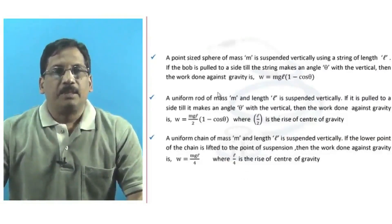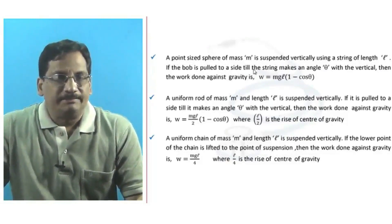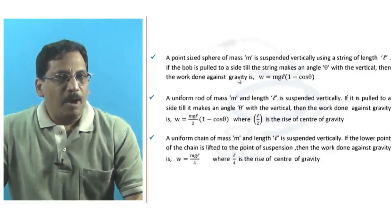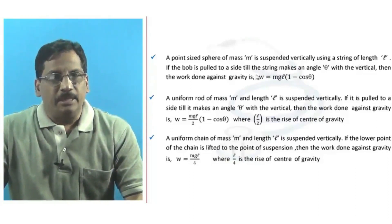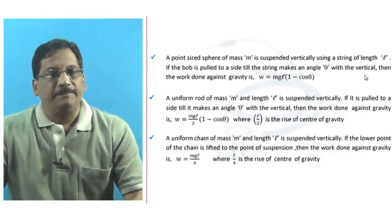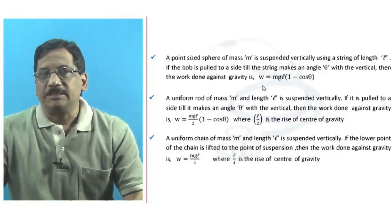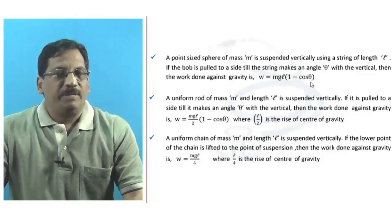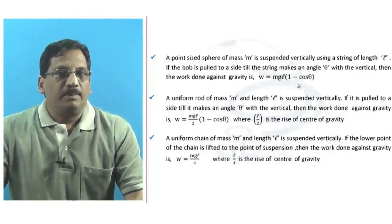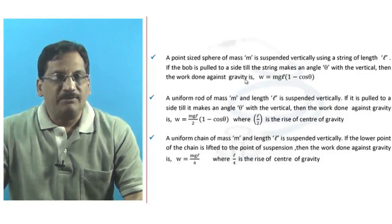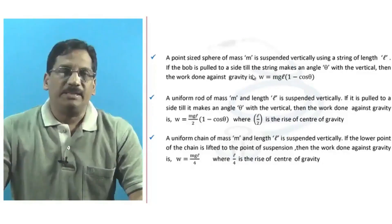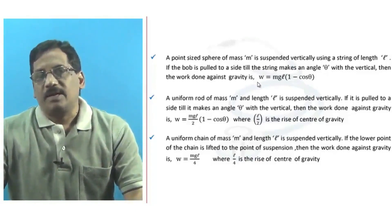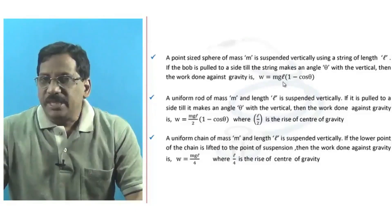Suppose a point-sized sphere (bob) of mass m is suspended vertically using a string of length l. If the bob is pulled to a side until the string makes an angle theta with the vertical, then the work done against gravity is W = mgl × (1 − cos theta). This is a very important formula.